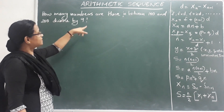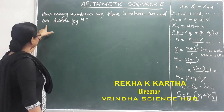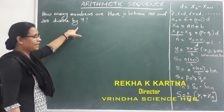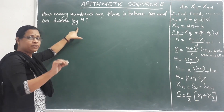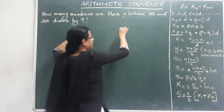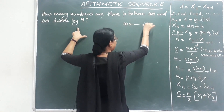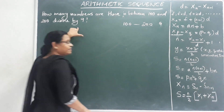How many numbers are there in between 100 and 200 divisible by 9? In the range 100 to 200, we need to find the count of numbers divisible by 9.